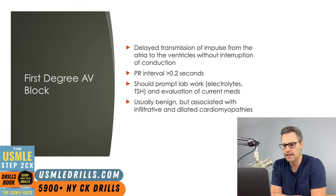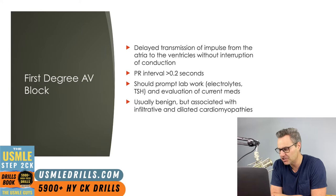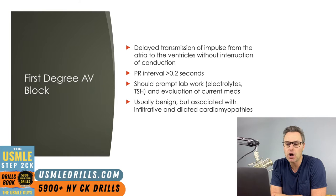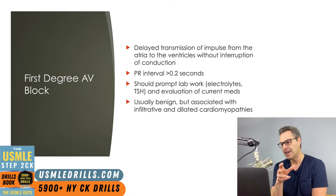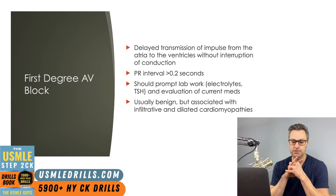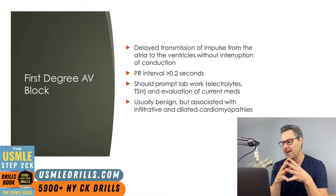Now let's talk about heart blocks — the main focus of this lecture. Starting with first degree AV blocks: you will recognize these because there is not an interruption, just a delay in the transmission of an impulse from the atria to the ventricles. This delay is seen on ECG as a prolongation of the PR interval, and any delay greater than 0.2 seconds constitutes a first degree AV block. The most common location is the AV node, but the atria or bundle of His are also possible.